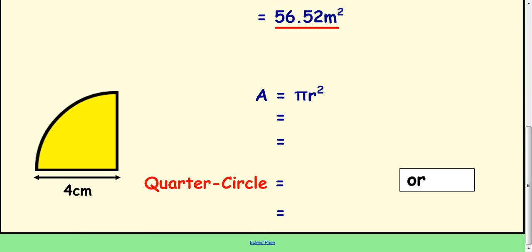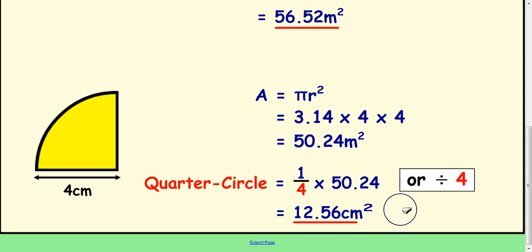So work out the full circle first. So 3.14 times 4 times 4. Type that into your calculator. 50.24 meters squared. And then just divide by 4 or a quarter it. So a quarter of this. And you get 12.56 centimeters squared.